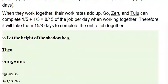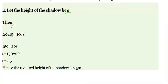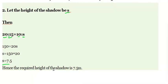Let S be the height of the shadow. Then 20 over 15 equals 10 over S. Cross-multiplying: 20S equals 150, so S equals 150 divided by 20, which is 7.5. Hence the required length of the shadow is 7.5 meters.